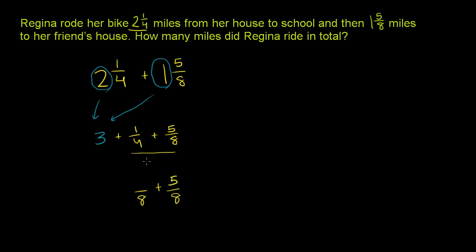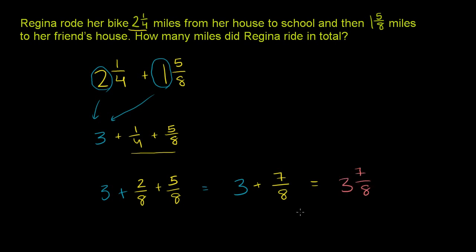5/8 will still be 5/8. To go from a denominator of 4 to 8, you have to multiply the denominator by 2, so we also need to multiply the numerator by 2 — 1 times 2 is 2. We still have the 3 out there. So 2 and 1/4 plus 1 and 5/8 equals 3, and then over 8 we add 2 plus 5, which gives us 7/8. So this is equal to 3 and 7/8 miles — she rode a total of 3 and 7/8 miles.